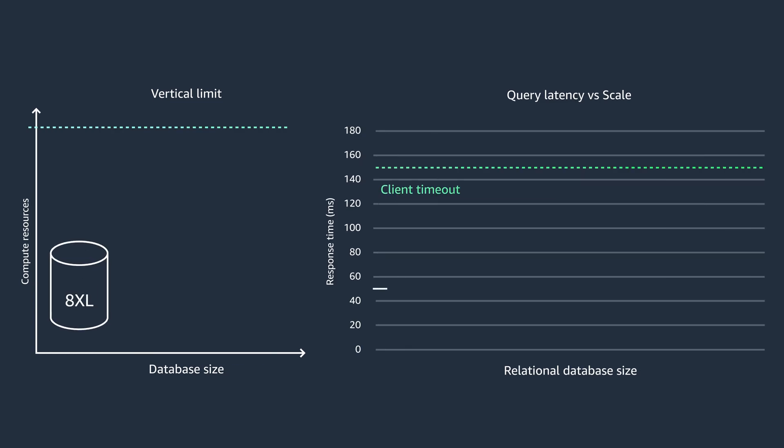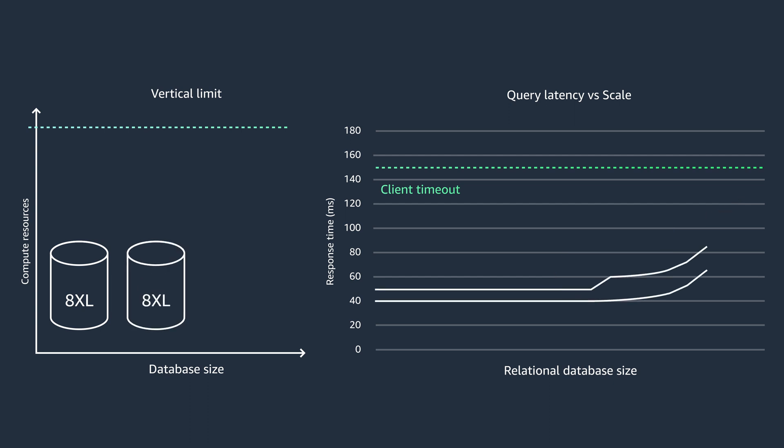Now let's look at how it works when we do horizontal scaling instead of vertical scaling. As the number of orders increases, you distribute the orders across multiple database shards. The number of incoming database requests per shard stays within the limits and average response time doesn't go beyond client timeout. As you expect more orders to process, you can add more shards without affecting customer experience.